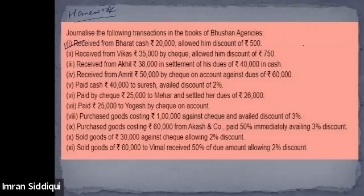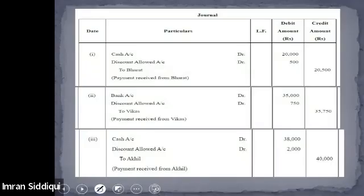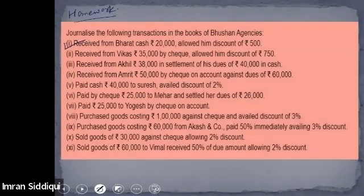In Bharat's account, the credit side shows 20,500. The general entry will be: cash account debit 20,000, discount allowed account debit 500, and to Bharat account. That's correct. Moving on to the next transaction.